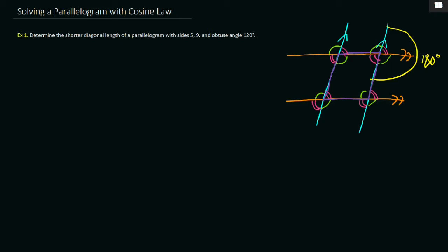It means that you subtract them from 180 degrees to get the other. So we're going to need this to solve this problem. So that is background. Let's jump in and see how we can solve this question with the cosine law. So let's read this question. Determine the shorter diagonal length of a parallelogram with sides 5, 9, and obtuse angle 120 degrees.